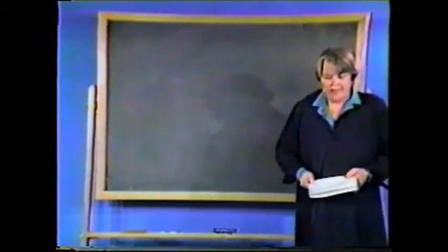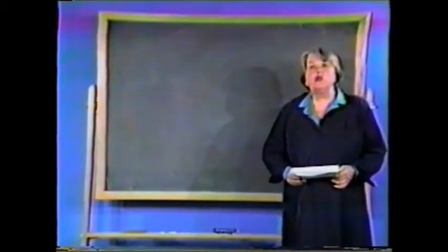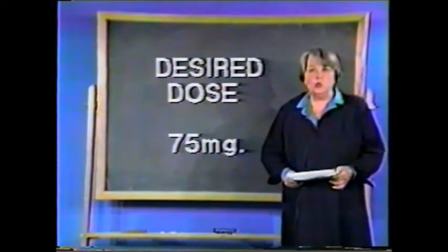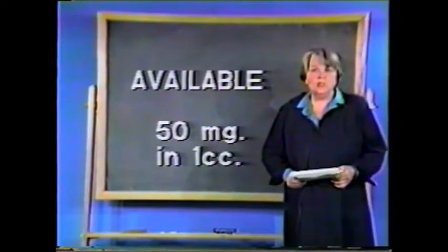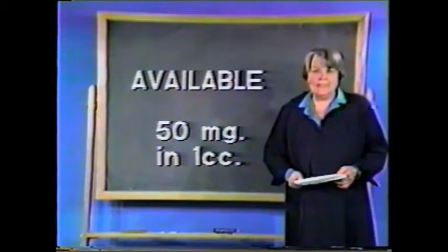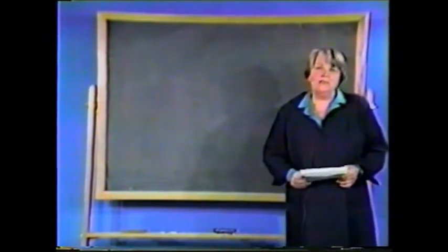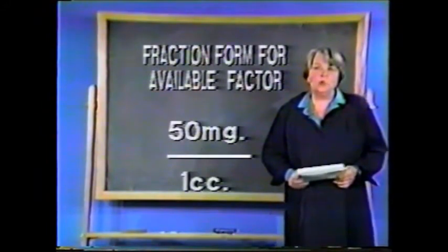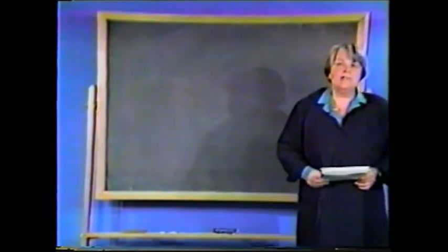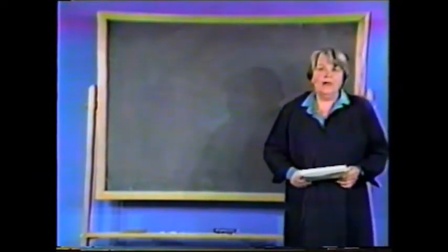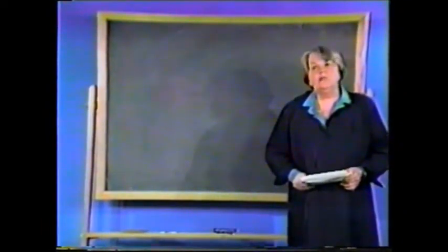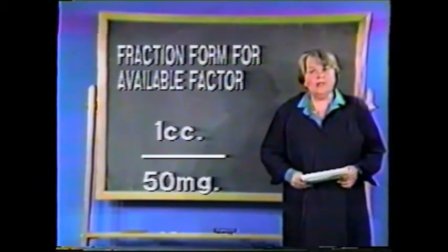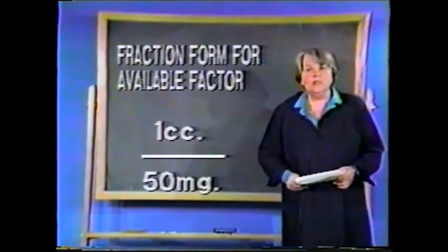Let's look at Claire's problem step by step. First, we start with the desired dose, which is 75 milligrams. The available dose is 50 milligrams in one CC. That means if you write that as a fraction, we get 50 milligrams over one CC. Now we want to multiply 75 milligrams by the available dose, but in order to cancel out the milligrams, we have to put the 50 milligrams in the denominator and the one CC in the numerator.